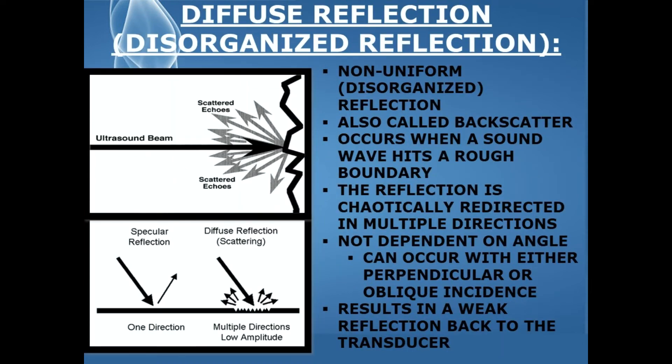Diffuse reflection is a disorganized type of reflection — it's non-uniform, and it's also known as backscatter. This occurs when a sound wave hits a rough boundary and the reflection is chaotically redirected in multiple directions. It's not dependent upon angle, so it can occur with either perpendicular incidence, where the sound wave hits at exactly 90 degrees, or oblique incidence, where the sound wave hits at any angle other than 90 degrees. Diffuse reflection results in a very weak reflection returning back to the transducer.